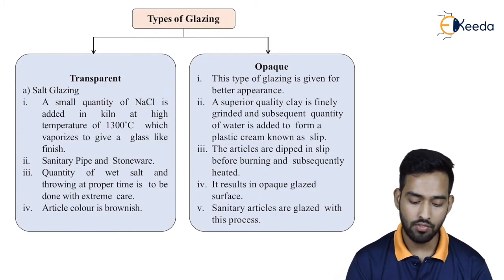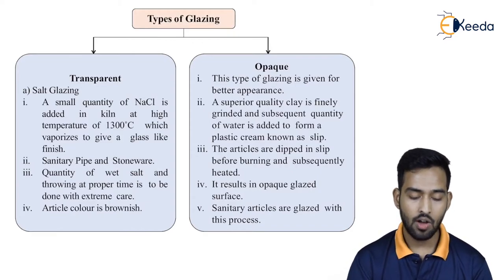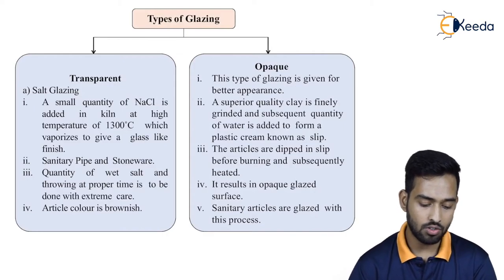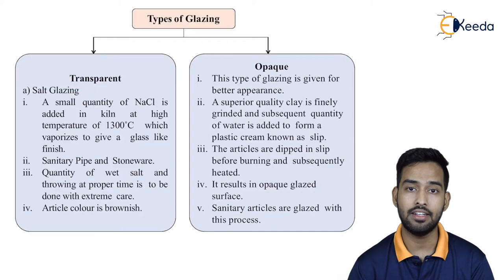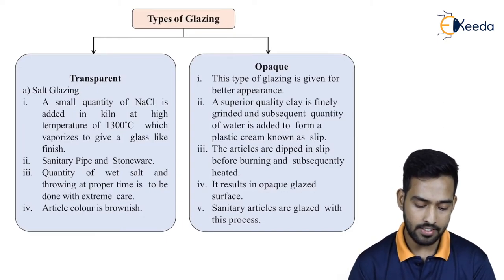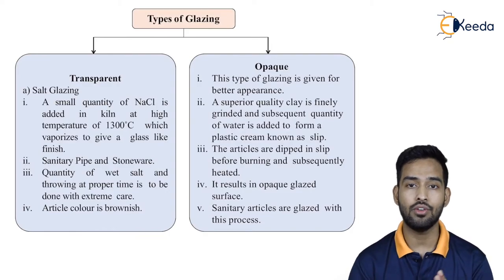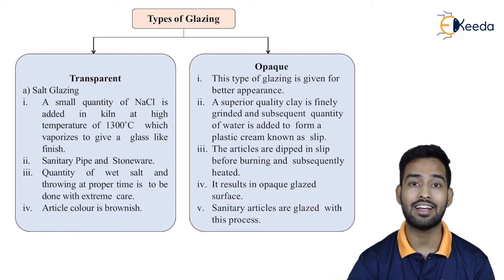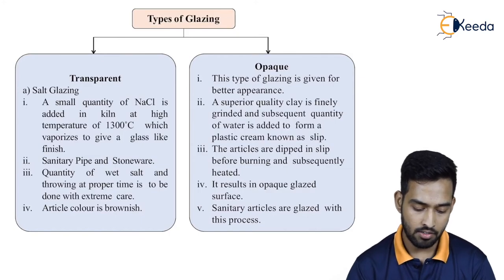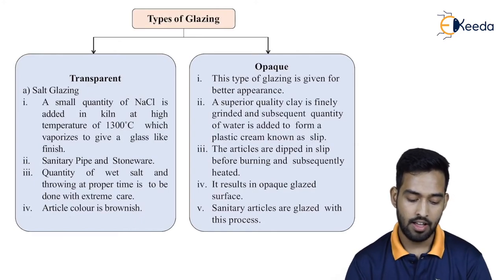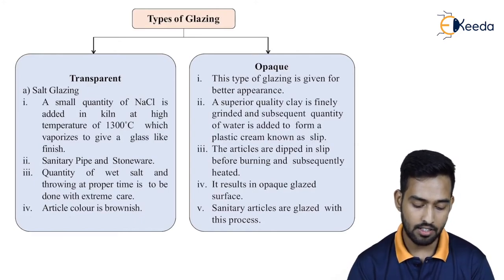There are two types of glazing: transparent and opaque. For transparent glazing, one method is salt glazing. A small quantity of NaCl (salt) is added in the kiln at a high temperature of about 1300°C, which vaporizes to give a glass-like finish. It is used for sanitary pipes and stoneware. The throwing of wet salt must be done with extreme care, and the article color produced is brownish.